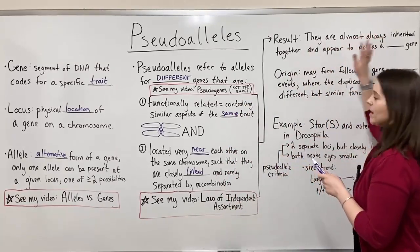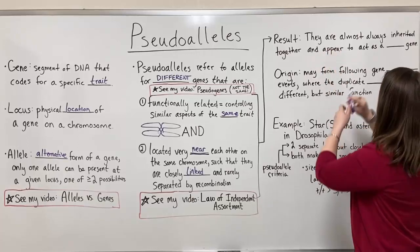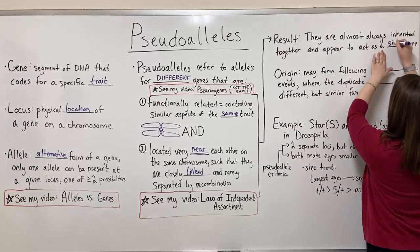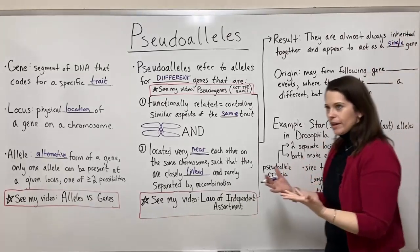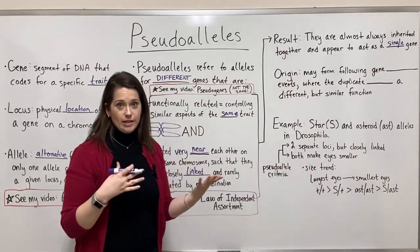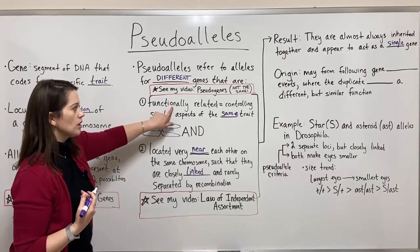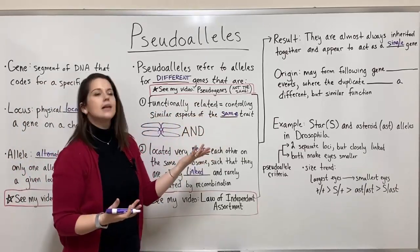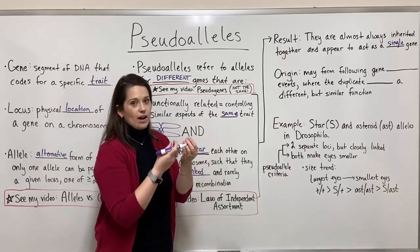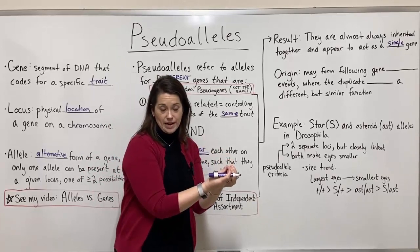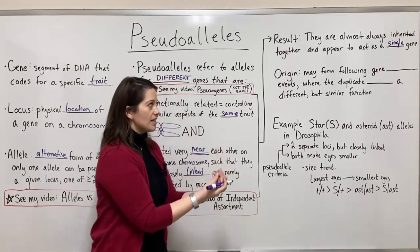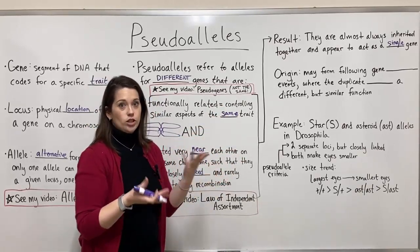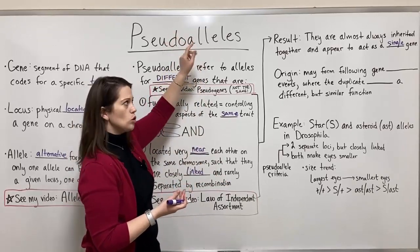Because of both criteria being fulfilled — functionally related and closely linked — even though we're talking about alleles for different genes, the result is that they are almost always inherited together. They're right next to each other, so recombination rarely separates them. And because they control very similar aspects of the same trait, they appear to act as a single gene rather than two separate pseudo-alleles.